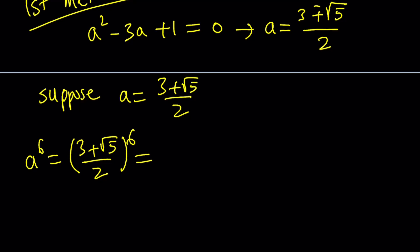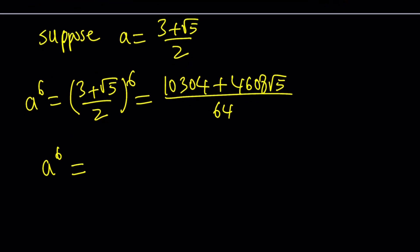So let's go ahead and raise this radical expression to the 6th power. This is going to take some time to do, but to keep a long story short, it's going to give you 10,304 plus 4,608 times root 5 divided by 64, because 2 to the 6th power is 64. Obviously, those are very large numbers, but you can factor out a 64 and simplify this expression, and when you do, you're going to get 161 plus 72 times root 5. All this work I did for you so we don't have to worry about evaluating these.